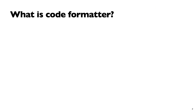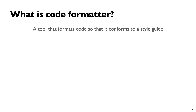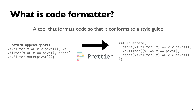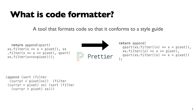What is a code formatter? It is a tool that formats your code so that it conforms to a style guide. For example, here's some JavaScript code, and you can use a tool to transform it into code that is actually understandable and readable. The aim of the tool I'm developing is the same, but for Racket.